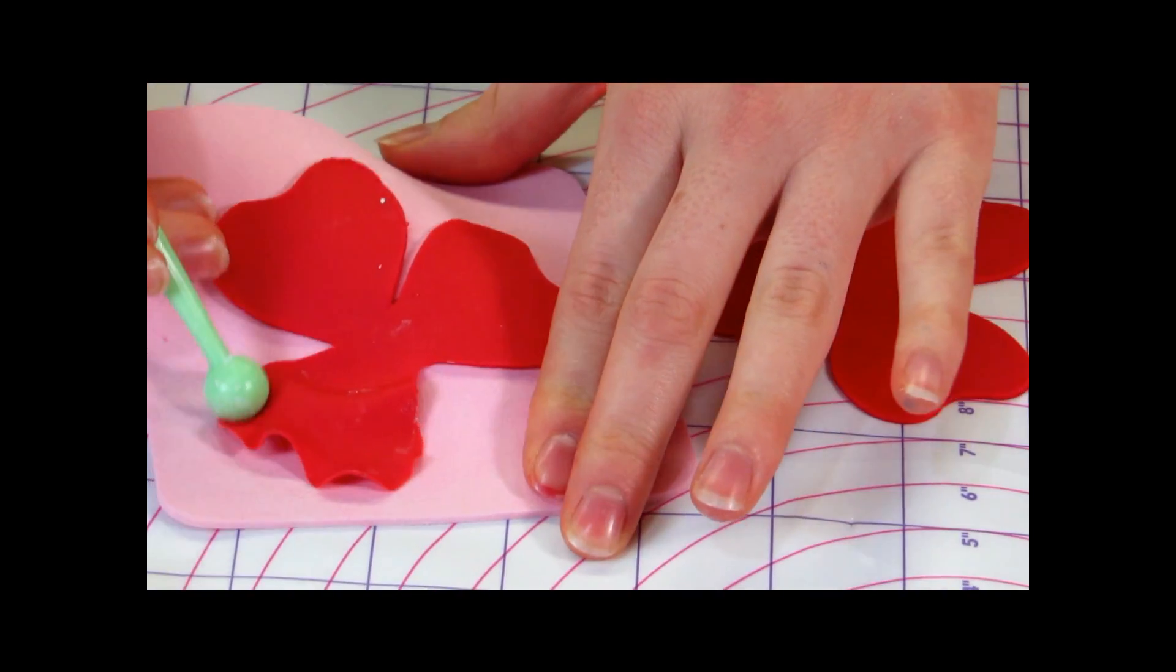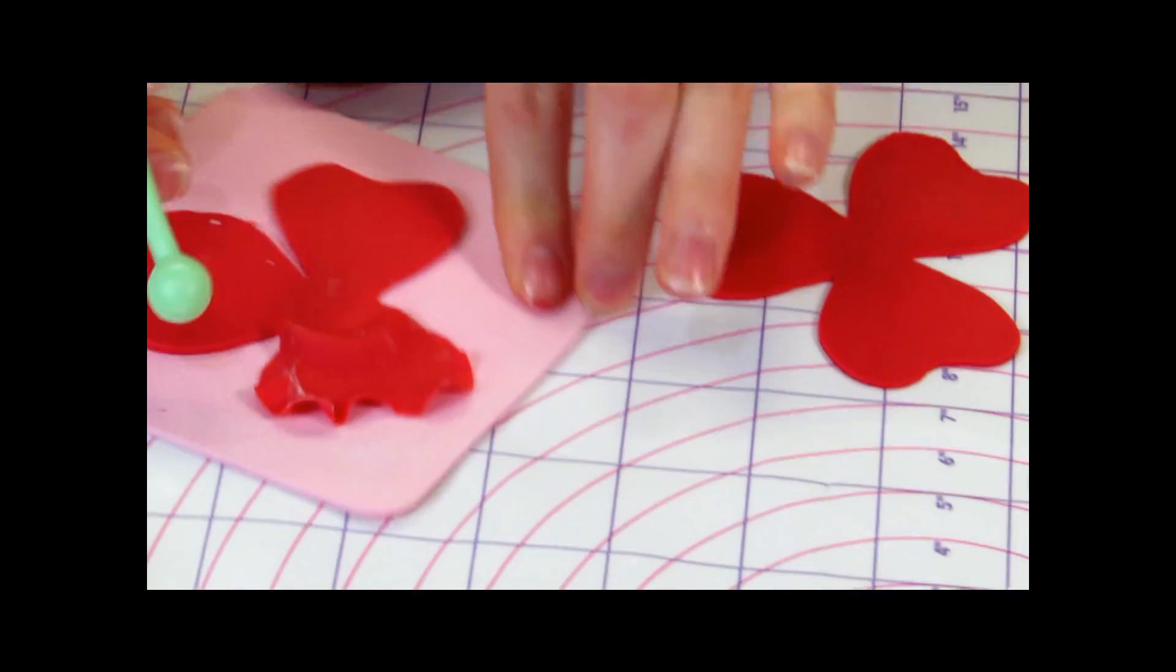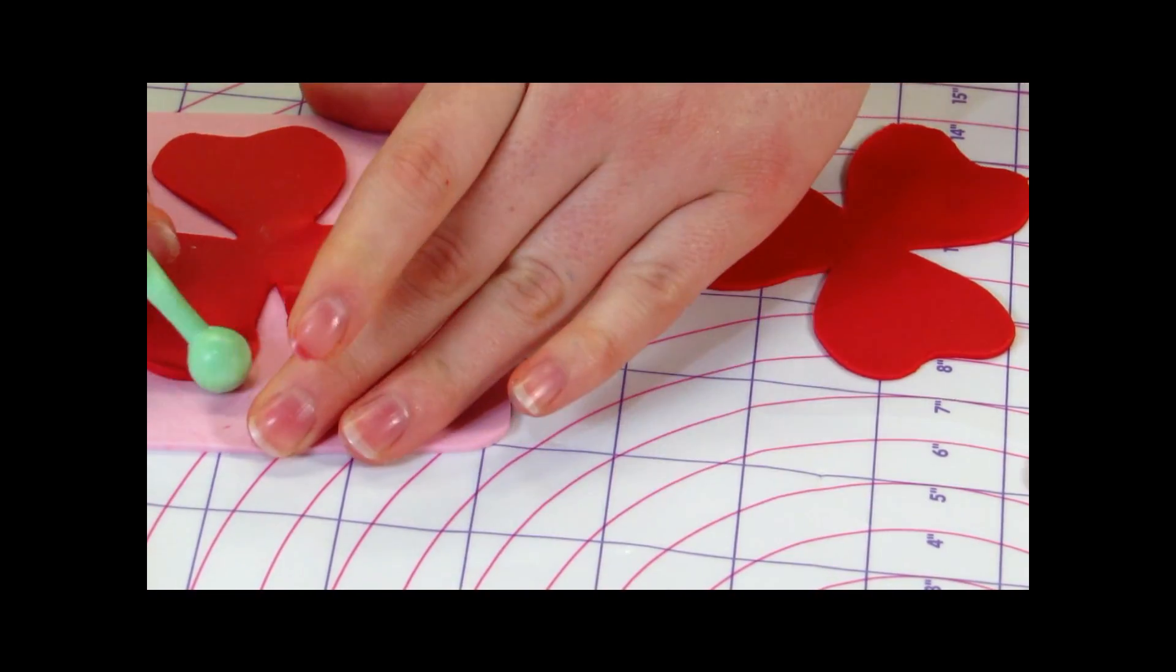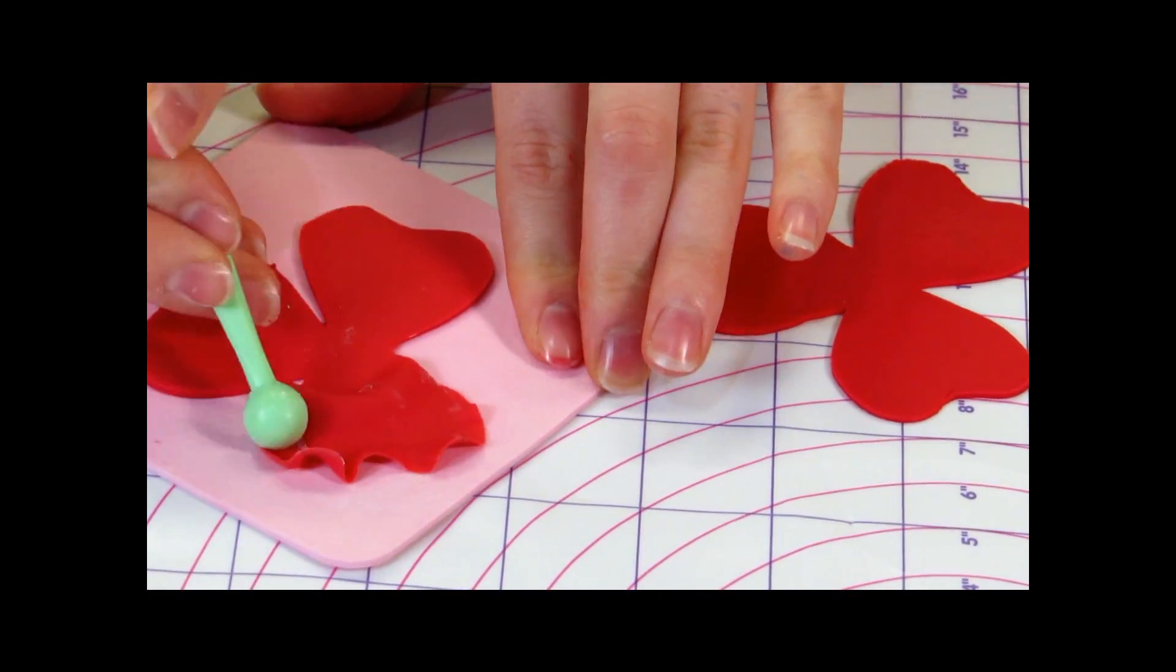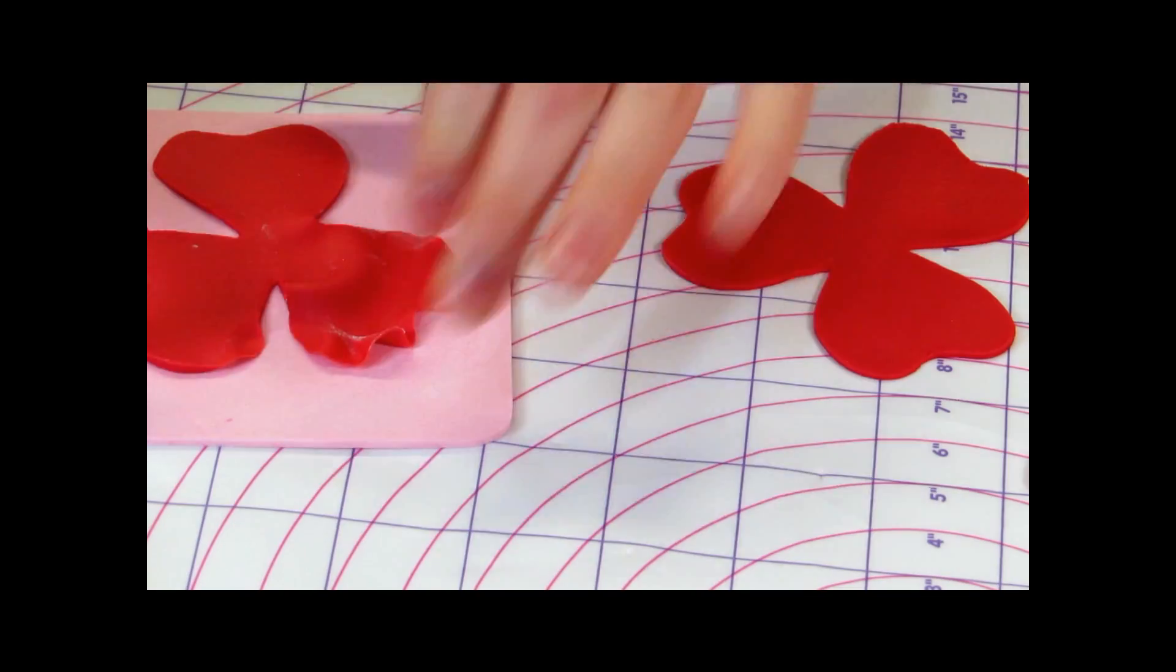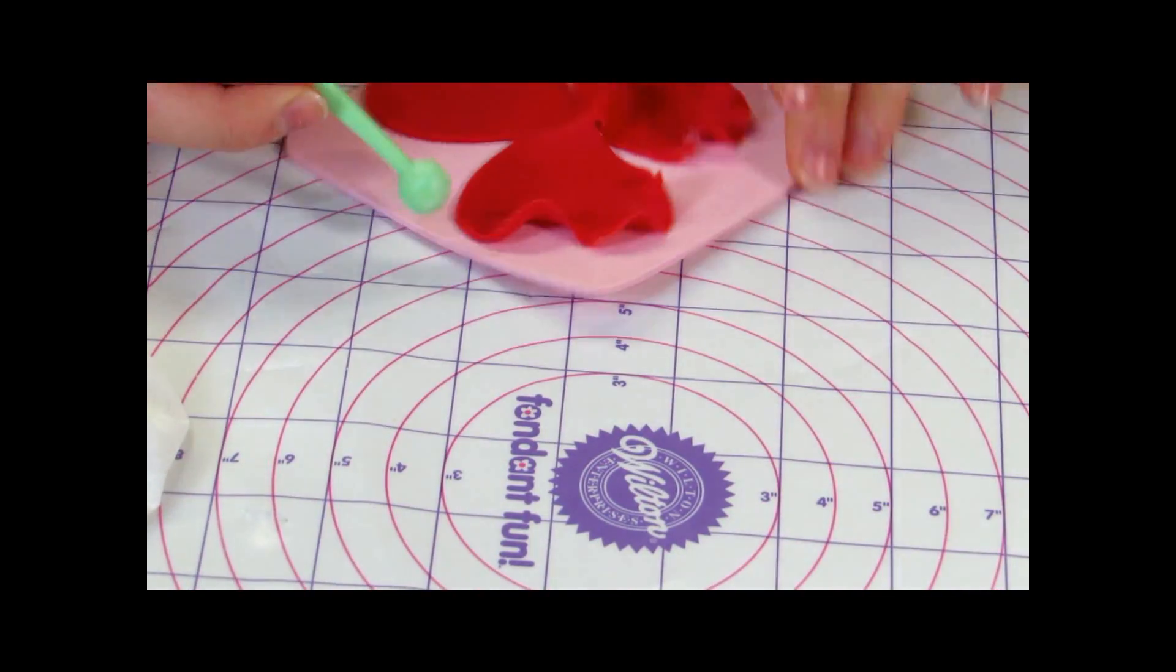Then using a thin piece of foam and a balling tool, you're going to run your balling tool around the edges of each of the flowers and that's going to create a ruffling effect and make the flowers look a lot more realistic. And you're going to want to do this to all of your petals.